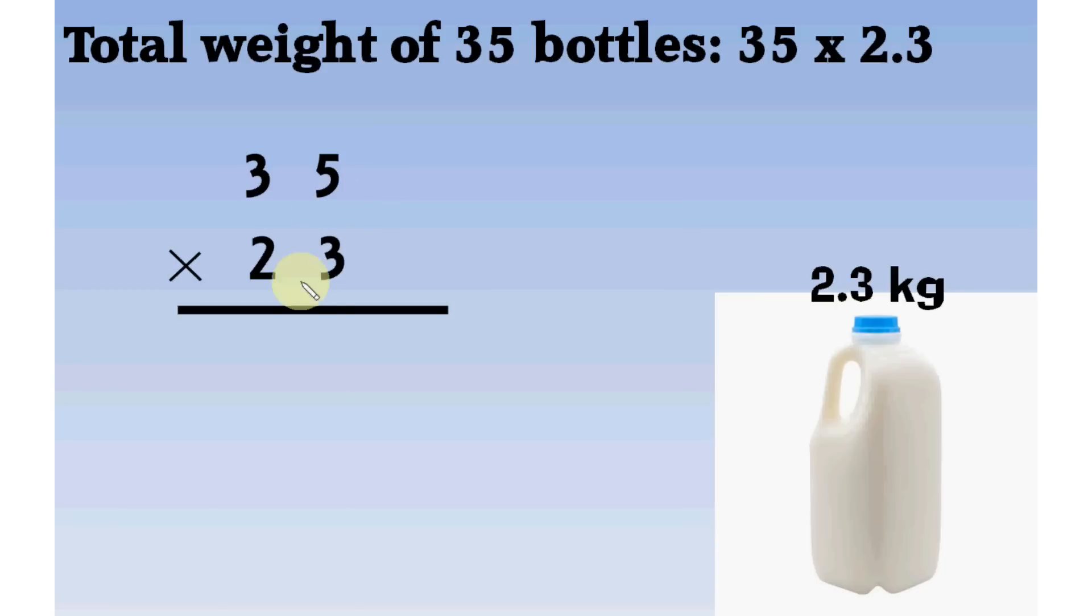We start from right. We take 3 and multiply 35 with it. 3 times 5 is 15. 5 stays here, 1 carried forward to next place. 3 times 3 is 9. We add the carry now. 9 plus 1 equals 10.